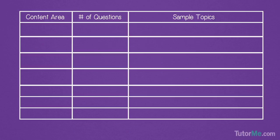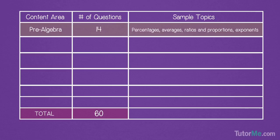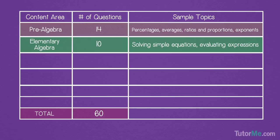Let's take a closer look at the topics that will be covered on the test. We can break down the concepts into six main categories. Pre-algebra, which covers percentages, averages, ratios and proportions, and exponents. Elementary Algebra, which covers simple equations and evaluating basic algebraic expressions.